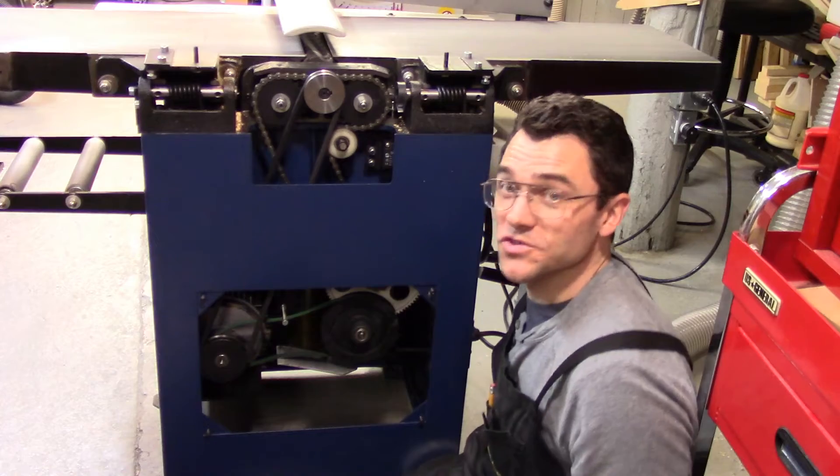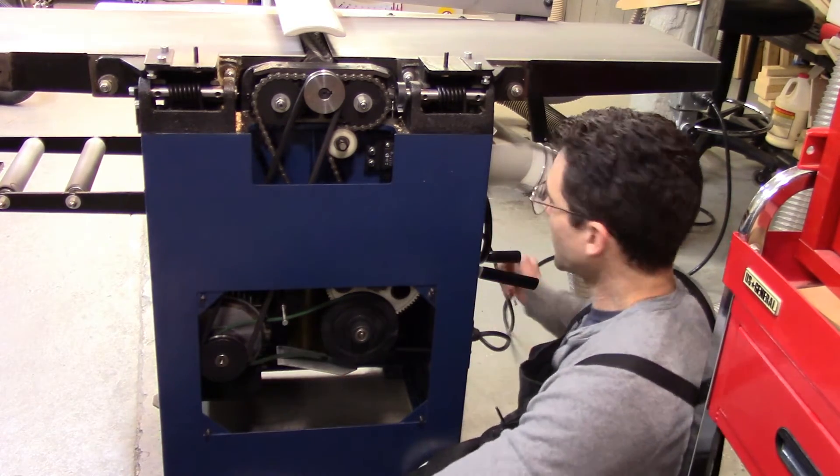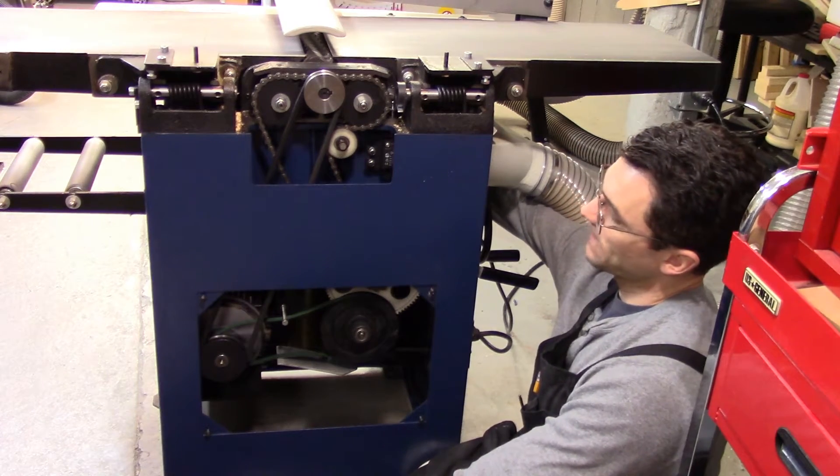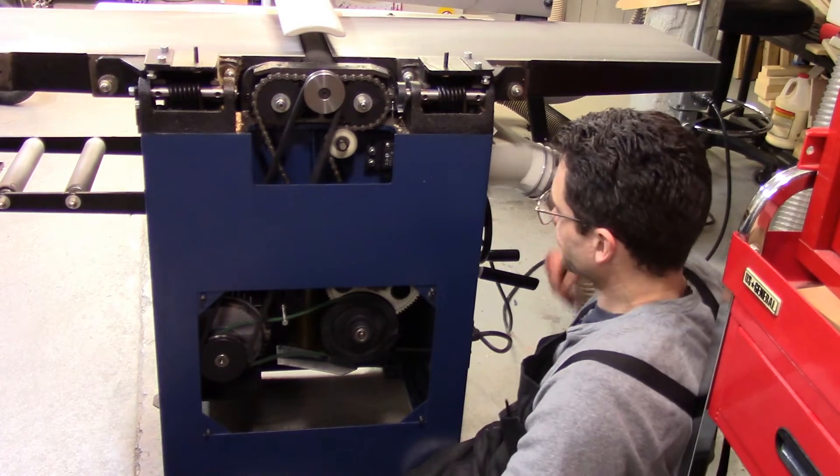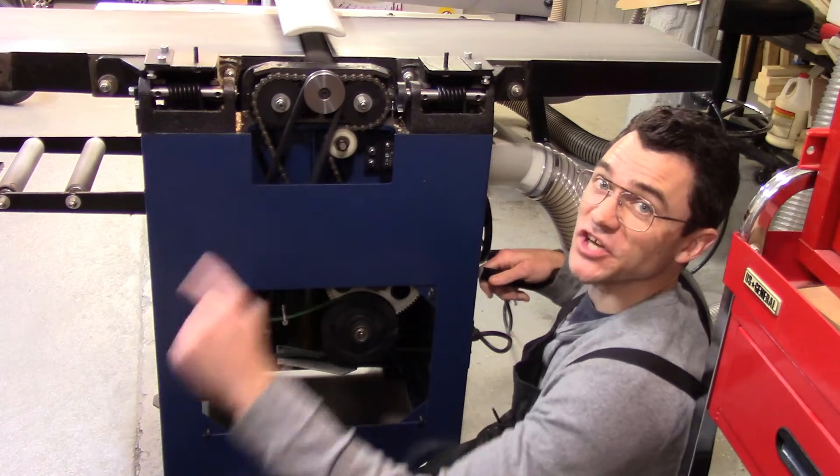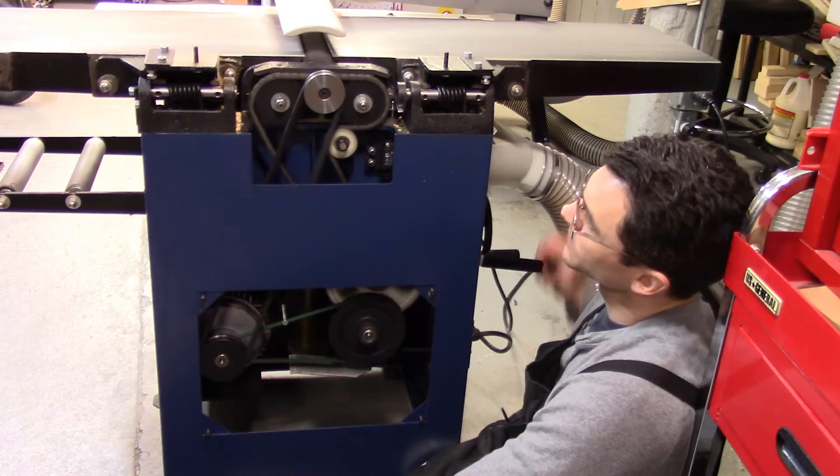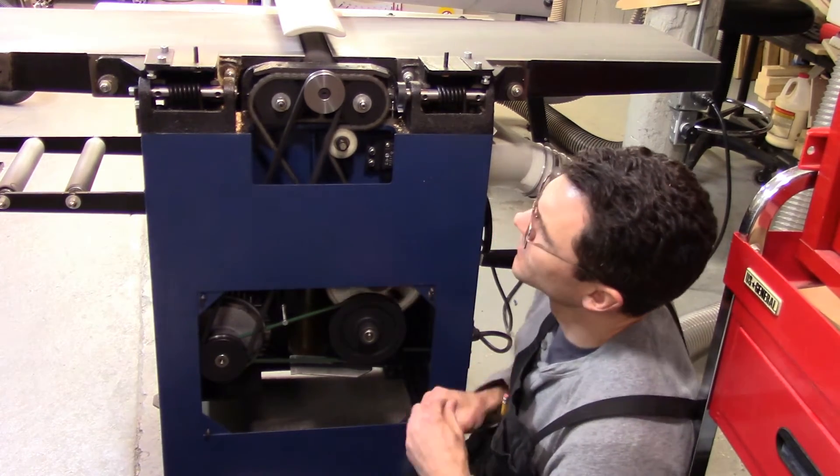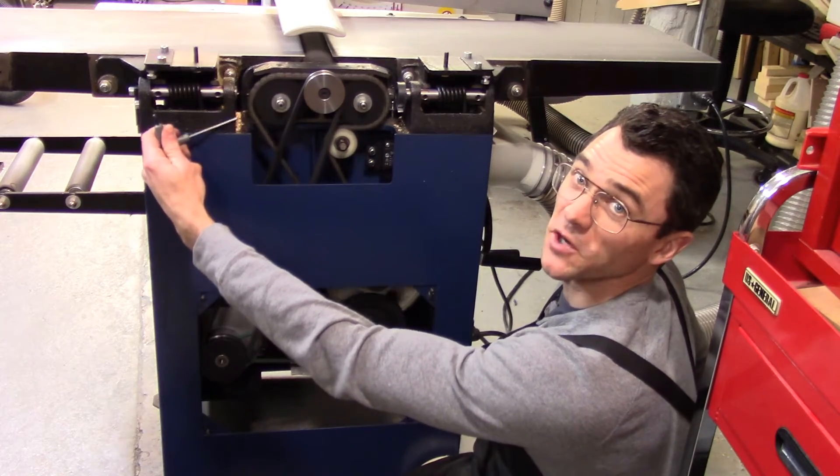So I'm going to fire this thing up to show you. Right now we're in jointer mode, this is not engaged. I'm going to do a little reach around. Alright, I'm going to do the lever now, keep your eye on the chain up there. Yeah, so right in here, you can see where it's just barely making contact.